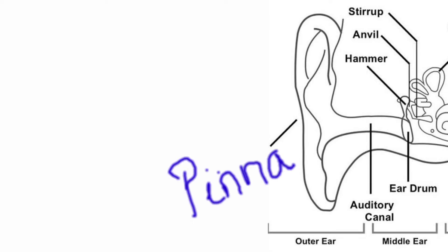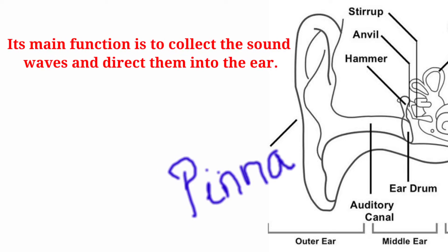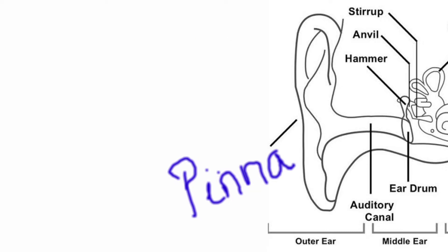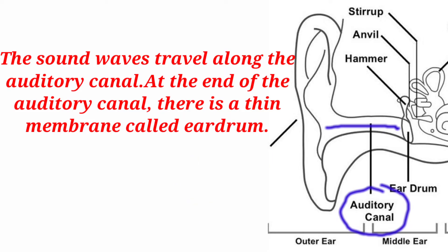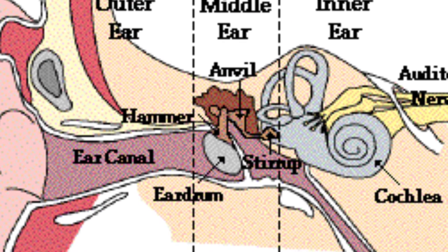The external ear is called the pinna. Its main function is to collect sound waves and direct them into the ear. The sound waves travel along the auditory canal, also called the ear canal. At the end of the auditory canal there is a thin membrane called the eardrum. Sound waves pass to the eardrum, which is like a stretched membrane that vibrates when it receives sound.